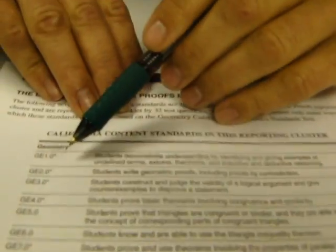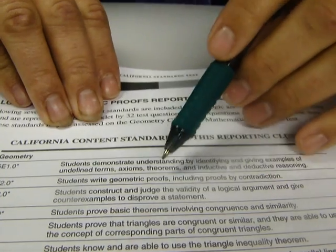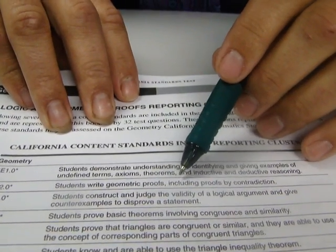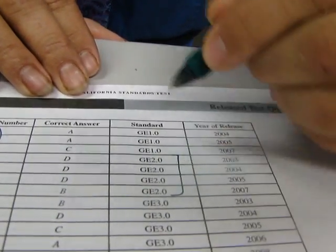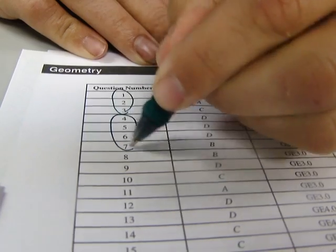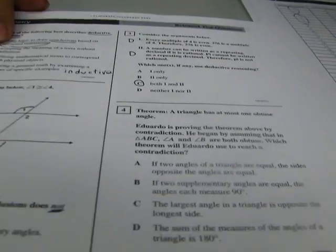So right now we're looking at standard 2. Let's examine what it says. Standard 2.0 - Students write geometric proofs, scary word proofs, including proofs by contradiction. So if we look here, standard 2.0, that is these problems here. So that would be 4, 5, 6, and 7. So we're doing 4, 5, 6, and 7 from the star packet.